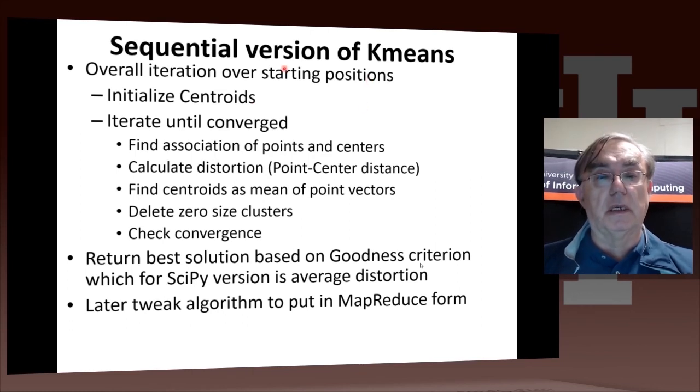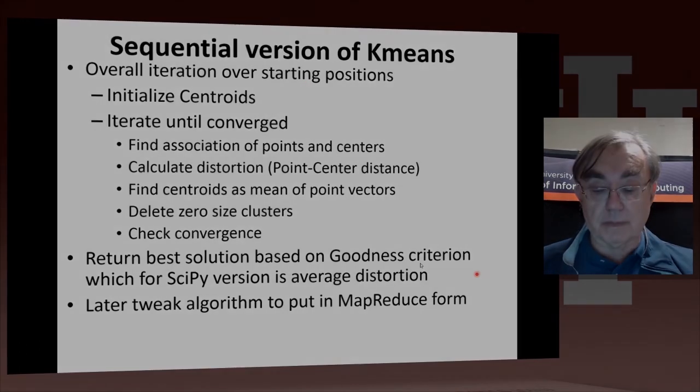Another point about this more detailed algorithm is we do an iteration over the starting positions for the cluster centers. There is a parameter which defaulted to 20 in the Python code for the number of such iterations. We will actually run it with different numbers for that iteration, typically one, because we want to show what happens when you get trapped in the local minima and you do not necessarily get the best solution.